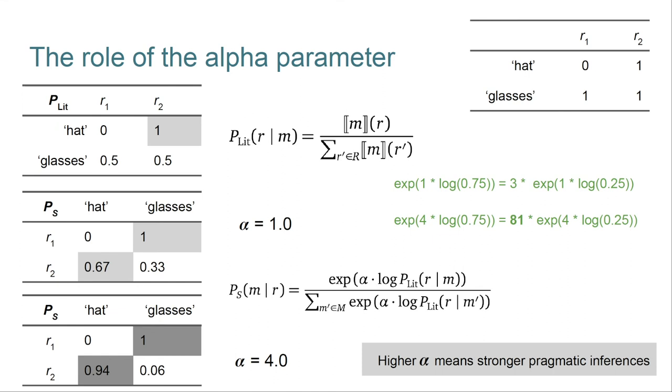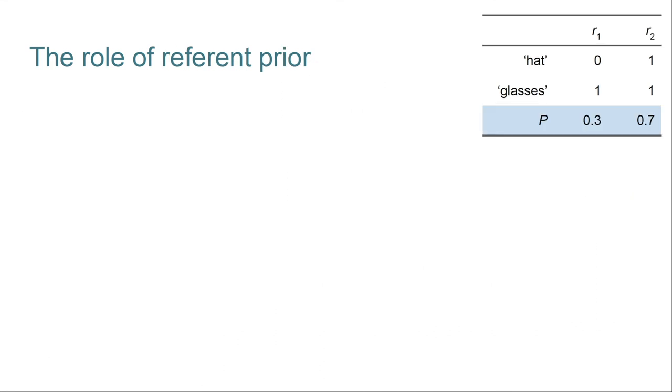We have one more component to review, that's the referent priors. We'll stick with our usual reference game. But now we've created a strong bias in favor of referring to r2. And this too will reduce our implicature that glasses refers to r1, as you'll see. Now, when the listener hears glasses, they can't be sure whether this is steering them toward r1 or just reflects the speaker's eagerness to refer to r2 with any language.